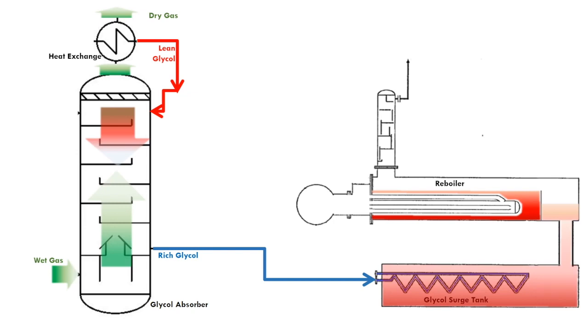The rich glycol flows through the coils in the glycol surge tank. The purpose is to preheat the rich glycol. This will increase the efficiency of the regeneration process as the process needs to increase the rich glycol temperature to remove the water.